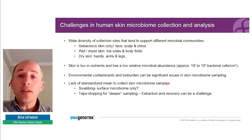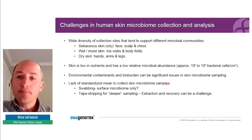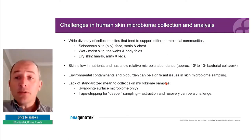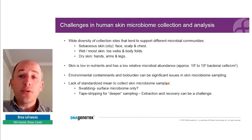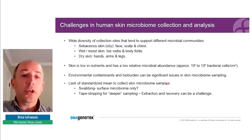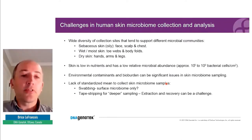Then there's wet or moist skin — prime examples are the toe web or any body fold. And then there's dry skin, so that would be the hand, arm, or legs. In general, skin is very low in nutrients, and as such it has a very low relative microbial abundance — anywhere between 10³ to 10⁹ bacterial cells per square centimeter.